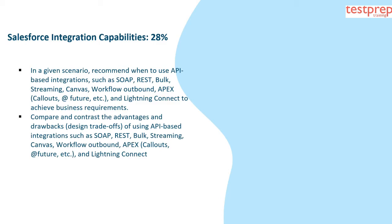Second, compare and contrast the advantages and drawbacks, and design trade-offs, of using API-based integrations such as SOAP, REST, Bulk, Streaming, Canvas, Workflow Outbound, Apex Callouts, AtFuture, etc., and Lightning Connect.